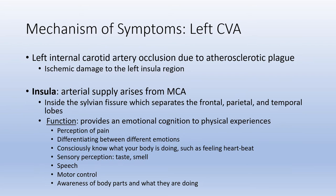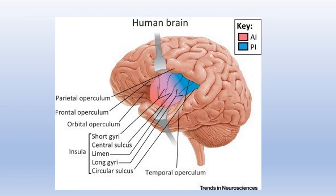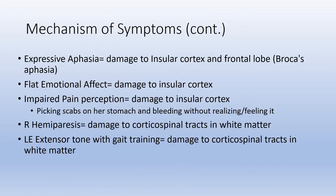Regarding mechanism of symptoms: she had a left CVA — left internal carotid artery occlusion due to atherosclerotic plaque — which resulted in ischemic damage to the left insula region. The insula is supplied by arteries arising from the MCA and is located inside the Sylvian fissure, which separates the frontal, parietal, and temporal lobes. The function of the insula includes perception of pain, differentiating between emotions, consciously knowing what your body is doing, sensory perception, speech, motor control, and awareness of body parts. Here is a picture of the insula — it's described as the inner brain, deep and encompassing the temporal, parietal, and frontal lobes.